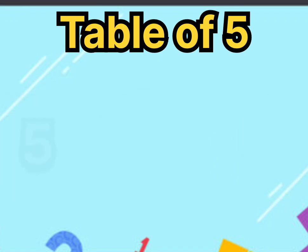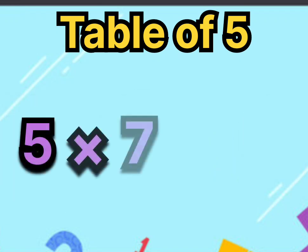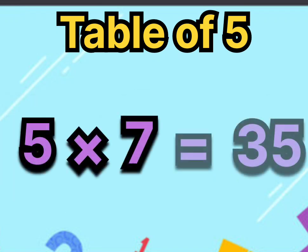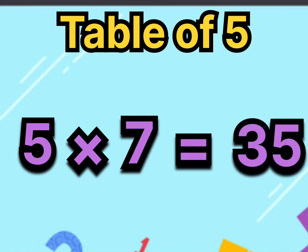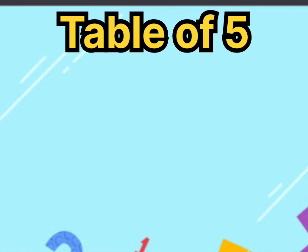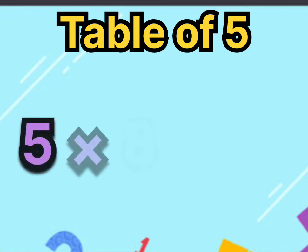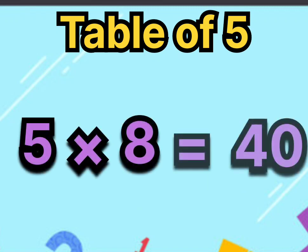Five sevens are thirty-five. Say it again, five sevens are thirty-five. Five eights are forty. Say it again, five eights are forty.